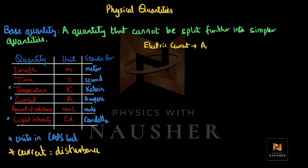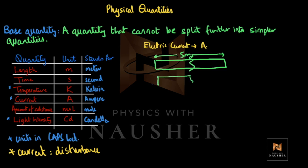The second thing I want to talk about is: why are these quantities called base quantities? Let's say an object has a length of 5 meters. If you split it from the center, each part becomes 2.5 meters.